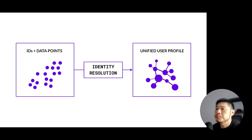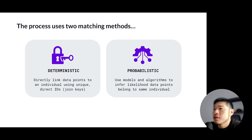There are two categories of matching that form the identity resolution process, and these are deterministic matching and probabilistic matching. Deterministic matching uses exact identifiers to link data points to individual users with certainty. These exact identifiers are common IDs, or a set of common IDs called join keys or match keys.